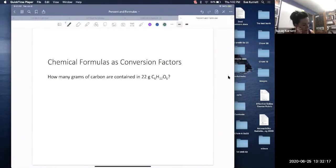OK, so chemical formulas as conversion factors. How many grams of carbon, that's what we're headed to, are contained in 22 grams of whatever that sugar is.